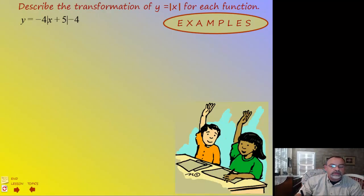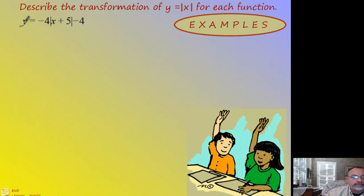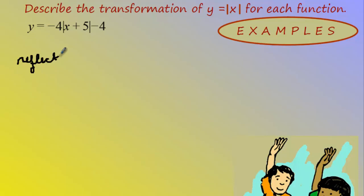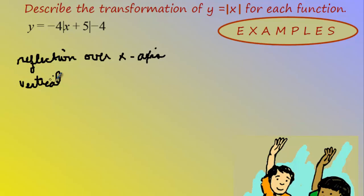I'm going to do one example of the type of problems you'll have in your homework. A problem might ask you to describe the transformation of the parent function given an equation. Always work from left to right, describing each thing one at a time. First, the negative sign is a reflection over the x-axis. Then the four is a vertical stretch — because the number is bigger than one — by a factor of four.